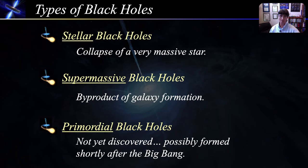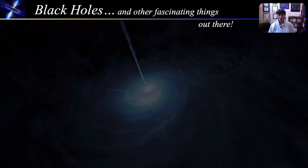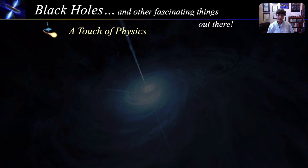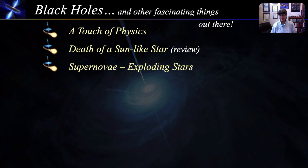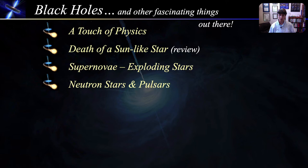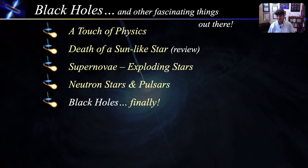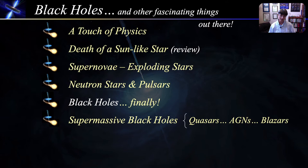So, what are black holes, and how do they form in nature? To understand this, we will need to cover a few topics along the way. The basic idea of a black hole is that you have to cram a whole bunch of stuff into a very small space. To better understand black holes, we will need to start with just a touch of physics. And for continuity from the last lecture, we will very briefly review the death of a sun-like star. We will then see how massive stars explode at the end of their lives, leaving behind stellar remnants known as neutron stars and pulsars, and finally, we'll get to black holes. We will spend quite some time on black holes, then briefly talk about supermassive black holes and related quasars, active galactic nuclei, and blazars.